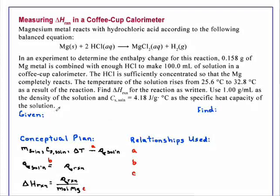In an experiment to determine the enthalpy change for this reaction, 0.158 g of magnesium metal is combined with enough HCl to make 100.0 mL of solution in a coffee cup calorimeter.